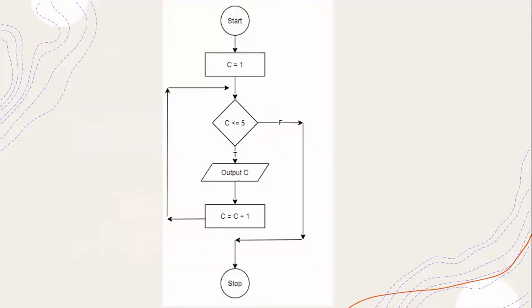So let's consider this particular flowchart. We start, and then we've got C, which starts off with the value 1. We know that this is a decision, and in this case the decision is based on C — C less than or equal to 5. If it's true, then we move down; if it's false, it reaches the end. So something happens inside: in this case, we are outputting the value of C. And here we can see that there is an increment — the value of C is changing, it's increasing by 1.